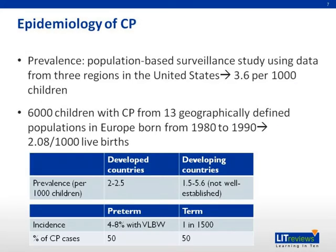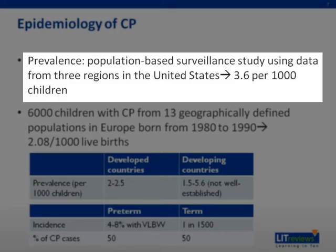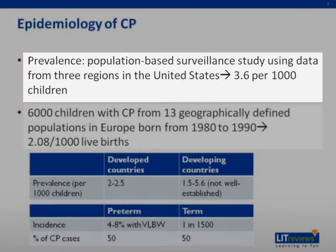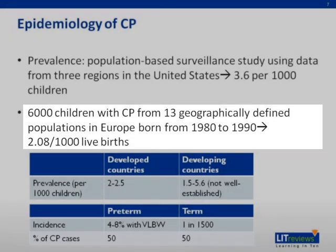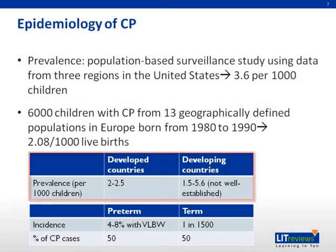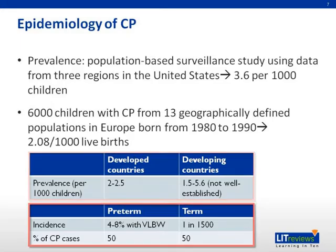In this article, it was mentioned that a population-based surveillance study using data from three regions in the United States showed prevalence of CP is 3.6 per 1,000 children. However, in another study that involved a larger geographical area — 6,000 children with CP from 13 populations in Europe born from 1980 to 1990 — it is 2.08 per 1,000 live births. From other population studies done in the literature, the prevalence in developed versus developing countries and the incidence among preterm versus term infants is as shown in the tables.